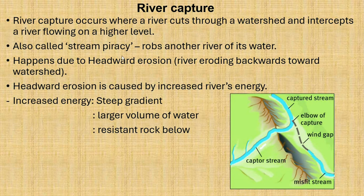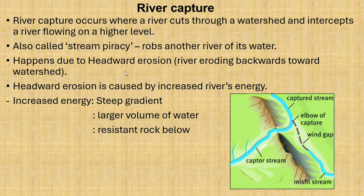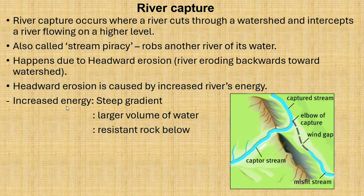This happens as a result of what is known as headward erosion. Headward erosion is the backward erosion — a river eroding backwards toward the watershed. The reason we have headward erosion is a result of the river receiving or increasing energy. Headward erosion is caused by increased river energy, which we have discussed in previous videos.